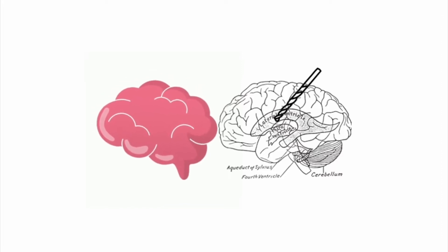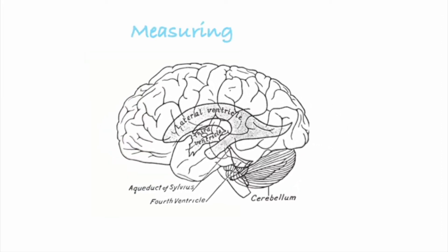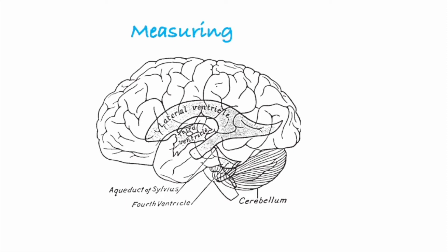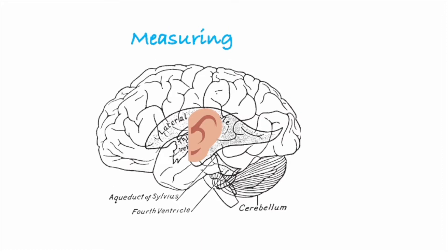Next we'll discuss measuring. We know we measure at the tragus of the ear, but really what we're measuring is the foramen of Monroe, which is the junction between the third ventricle and the lateral ventricle. We obviously cannot see that because we don't have CT vision, so we just use the tragus of the ear as our point of the foramen of Monroe.